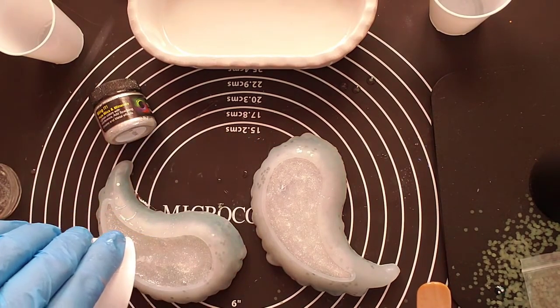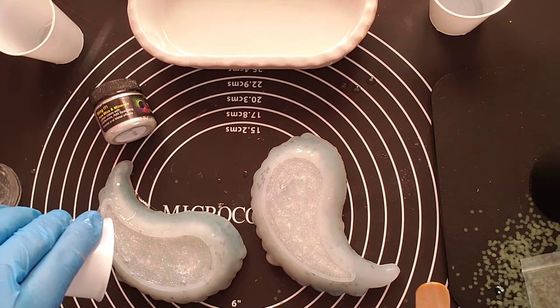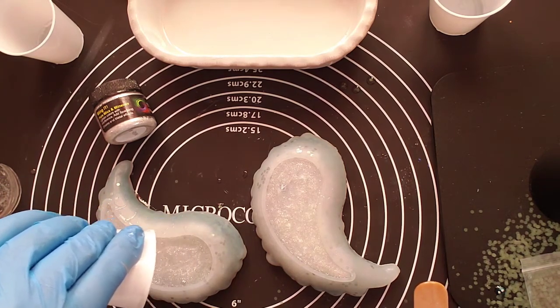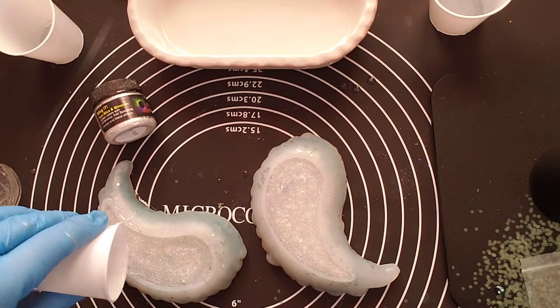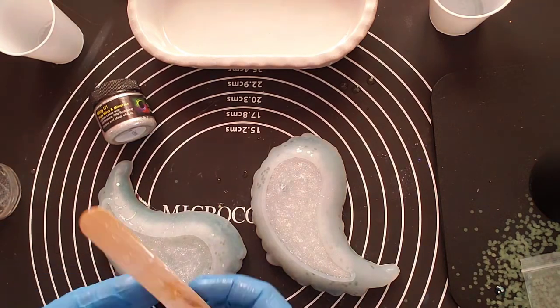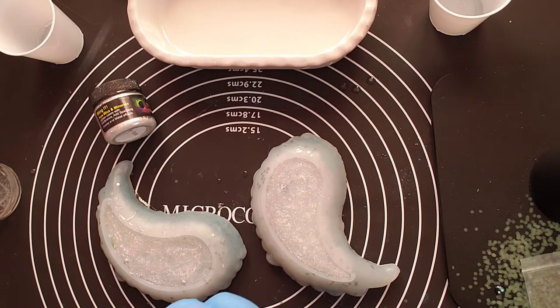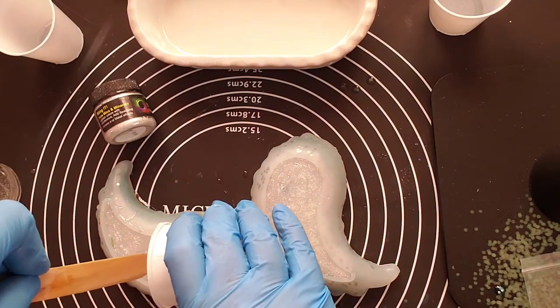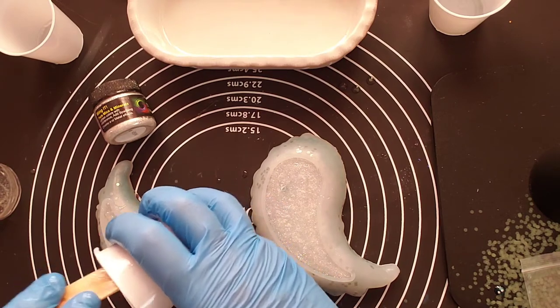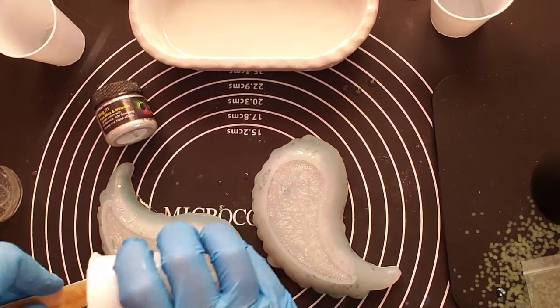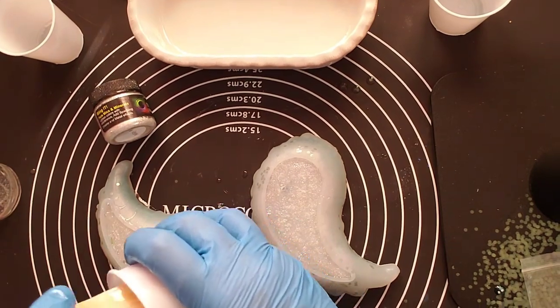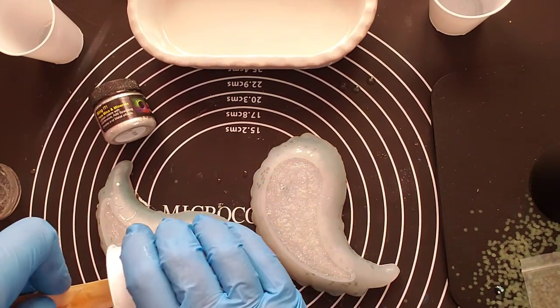I mixed about four ounces of resin, and I'd say each mold took about an ounce and a half, so they don't take a lot of resin at all. I do have probably an ounce, maybe a little bit more left, that I have not done anything with yet, and I'm going to use that in just a few minutes.